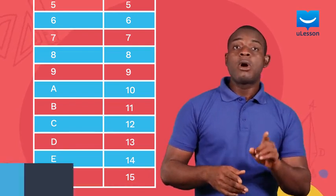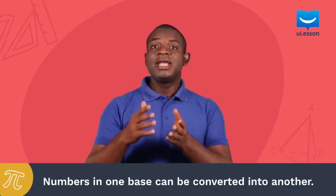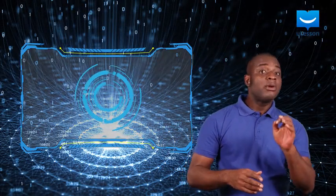This system is called the hexadecimal system. Another interesting fact is that numbers in one base can be converted into another base. Also, arithmetic operations can be done on numbers in other bases just like we do in base ten. We are going to see all these in upcoming lessons. Before we wrap up, I would like you to know that number bases have a wide range of applications in computer technology and coding. You can even use it to write secret messages that only you and your friends can understand.